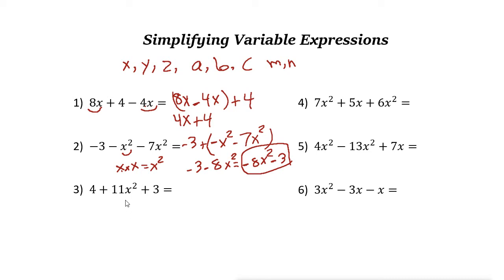Next one here. We have 4 + 11x² + 3. So we know that these two numbers are similar or like terms. The terms in an expression are separated by plus or minus. So 3 and 4 is 7. So the final answer is 11x² + 7.